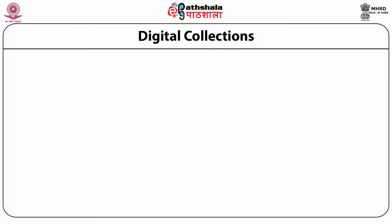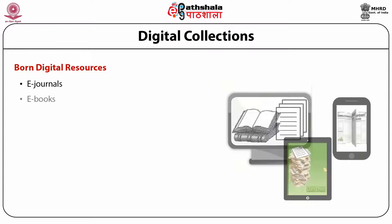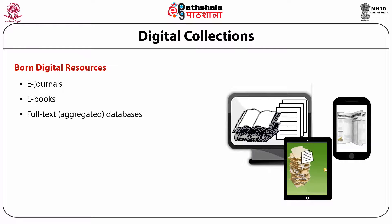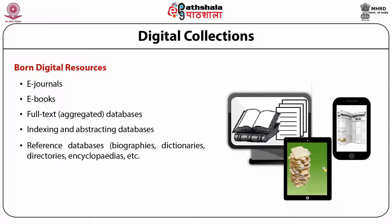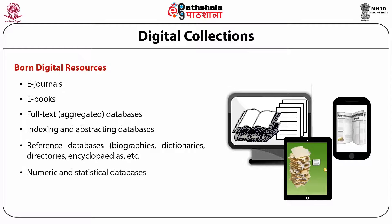Digital collections are grouped into two categories. One is born-digital resources created in the library or accessed from the publisher, aggregator, academic press, etc., which includes e-journals, e-books, full-text databases, indexing and abstracting databases, reference databases which include biographies, dictionaries, directories, encyclopedias, etc., numeric and statistical databases, e-images, e-audio and visual resources.